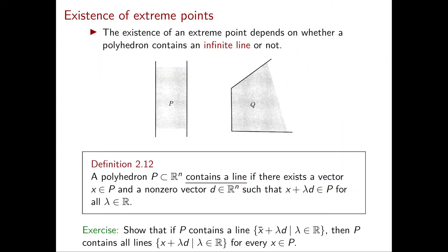In this video we will see two necessary and sufficient conditions for the existence of an extreme point, and one of them depends on whether a polyhedron contains a line or not. Let's now define what it means for a polyhedron to contain a line.